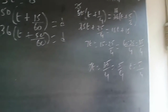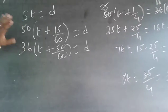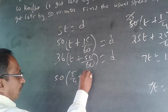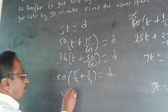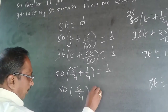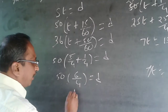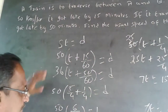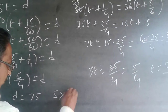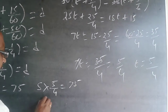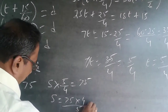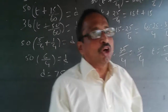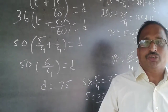Now that T = 5/4, substitute into the first equation: 50 into (5/4 + 1/4) = D, which is 50 into (6/4) = 50 × 1.5 = 75. So D = 75 km. Now find the usual speed S: S × 5/4 = 75, so S = 75 × 4/5 = 60. The usual speed of the train is 60 kilometers per hour.